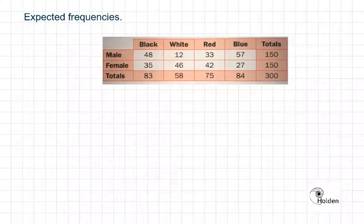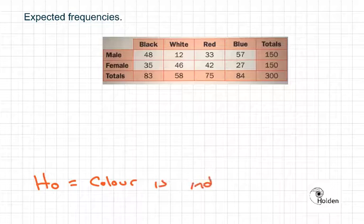Okay, so chi-squared test for independence. We've got our data, we've gone out, we've sorted out our null hypothesis. Our null hypothesis is that colour, t-shirt colour choice is independent of gender.